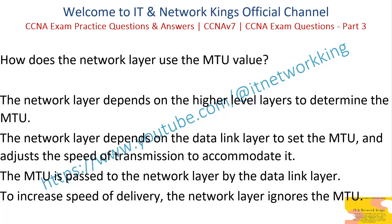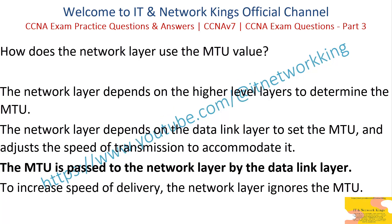How does the network layer use the MTU value? The network layer depends on the higher level layers to determine the MTU. The network layer depends on the data link layer to set the MTU, and adjusts the speed of transmission to accommodate it. The MTU is passed to the network layer by the data link layer. To increase speed of delivery, the network layer ignores the MTU. Answer: The MTU is passed to the network layer by the data link layer.